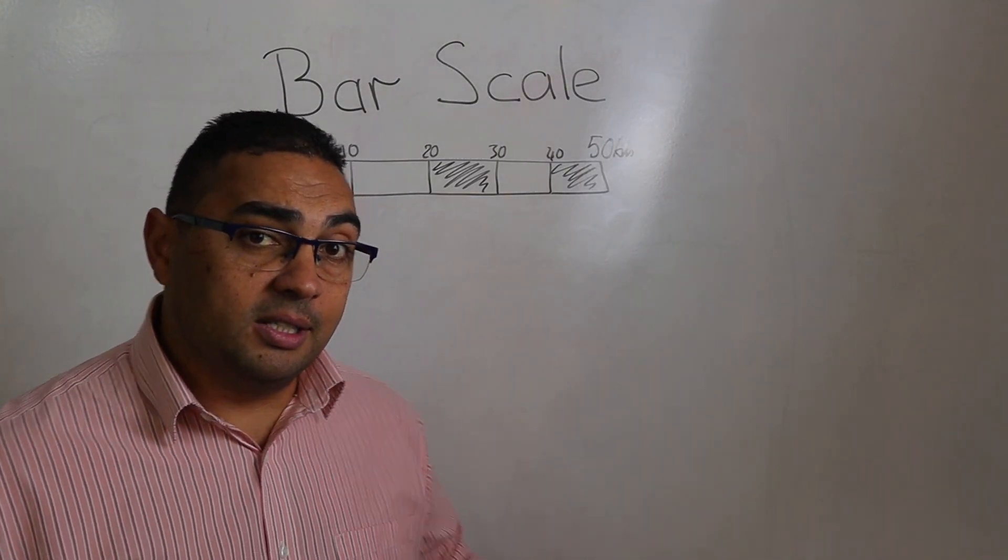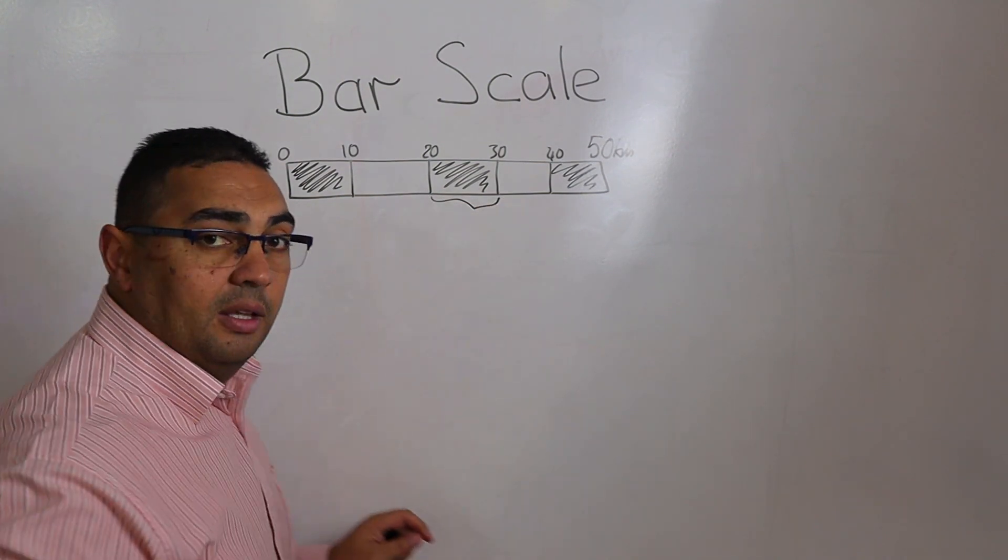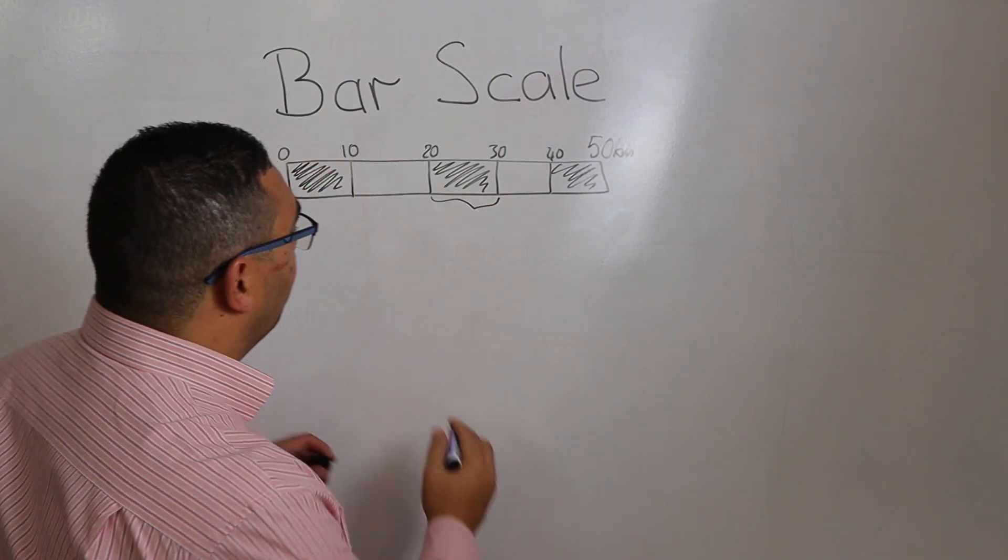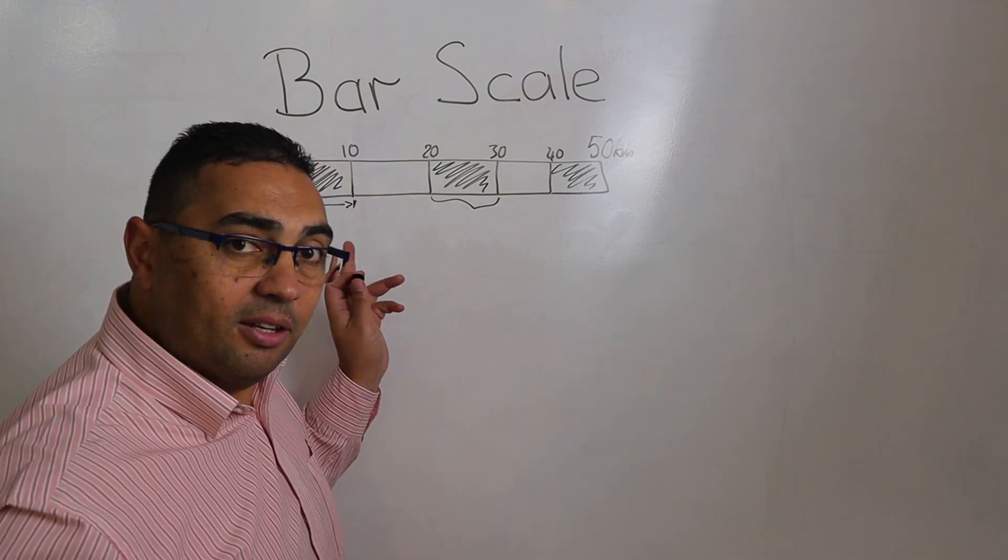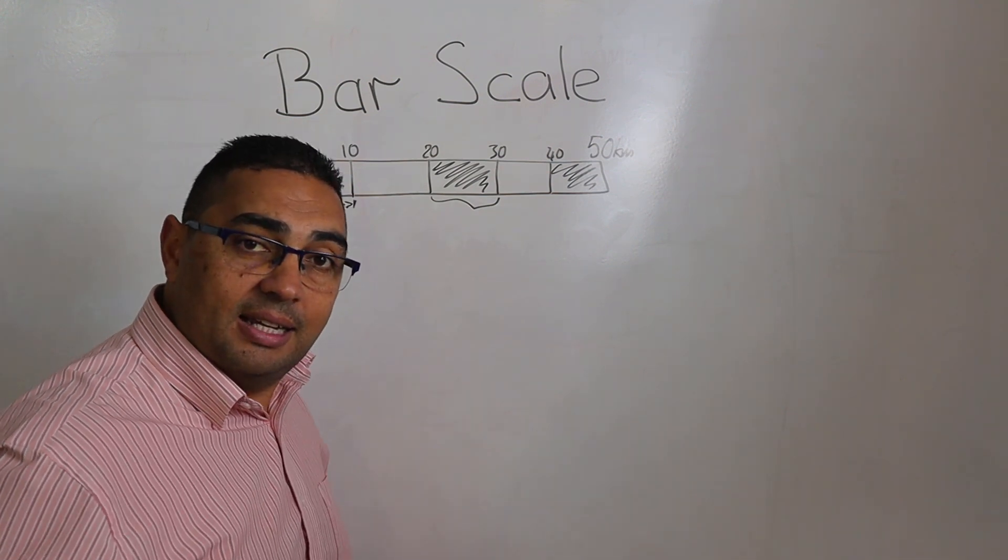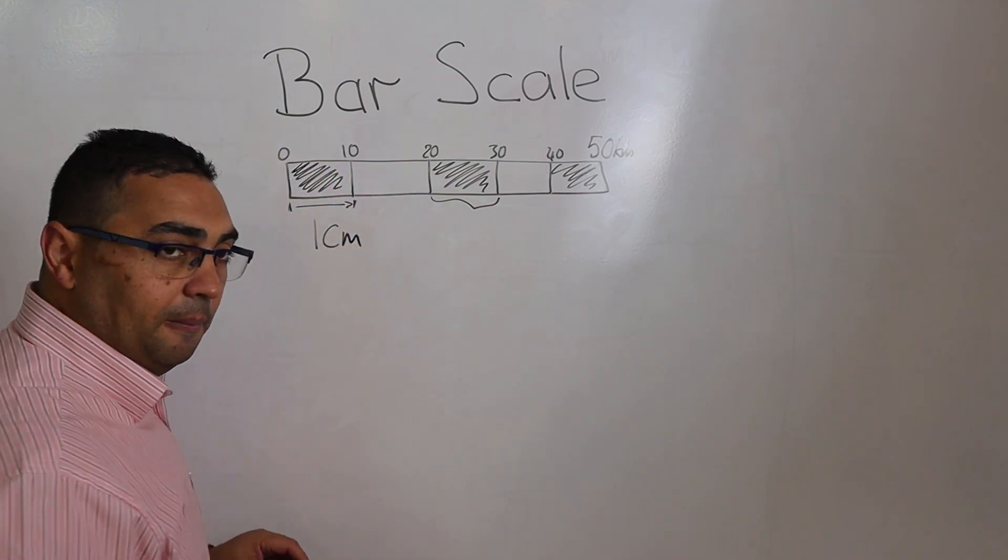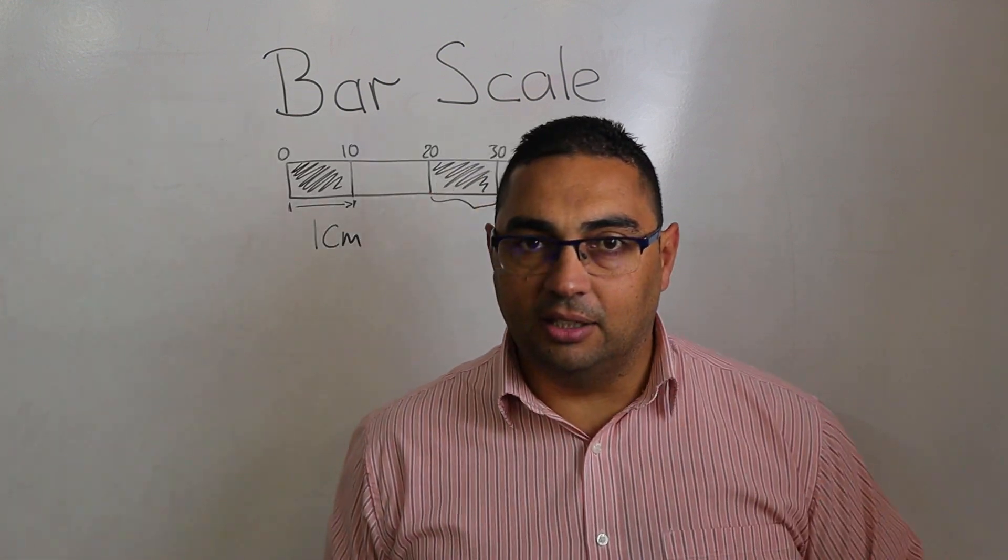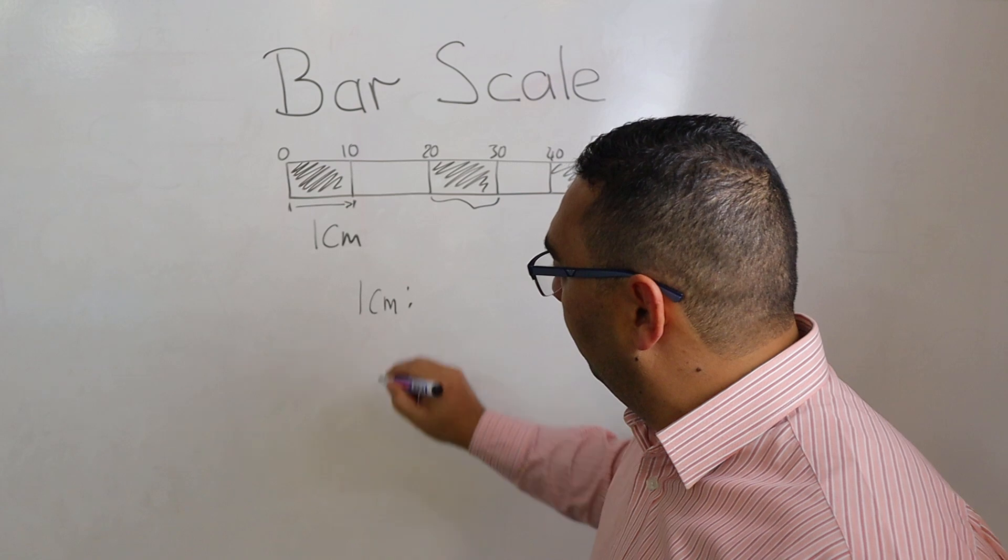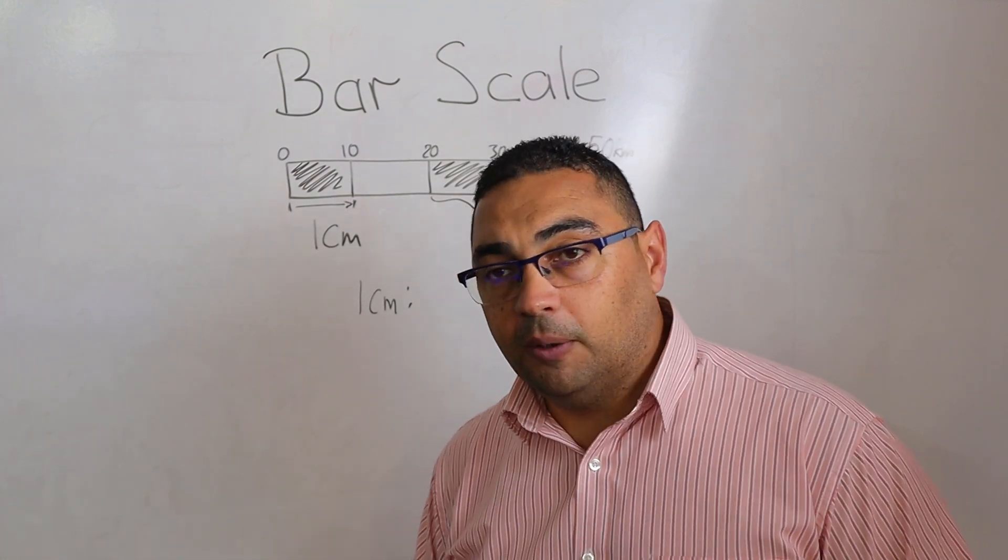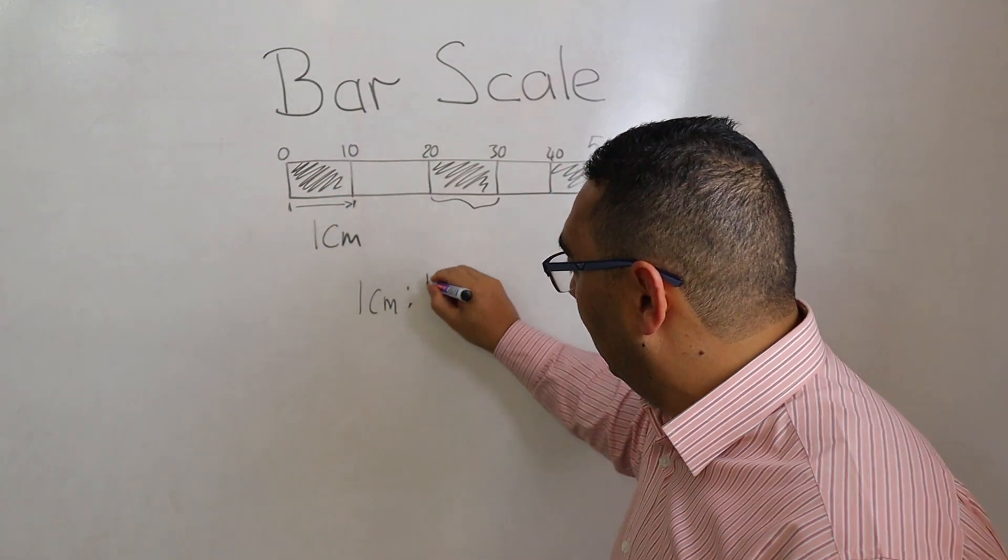Now the first thing I'm going to do is I'm actually going to measure the distance within the block. So what is the measurement from this point all the way to the end of that block? In this case, I know, because I've measured it, it's 1 centimeter. So what is that actually saying to us? Well, what it's saying is the following. 1 centimeter, and we put in our colon, is equal to what? 10 kilometers.